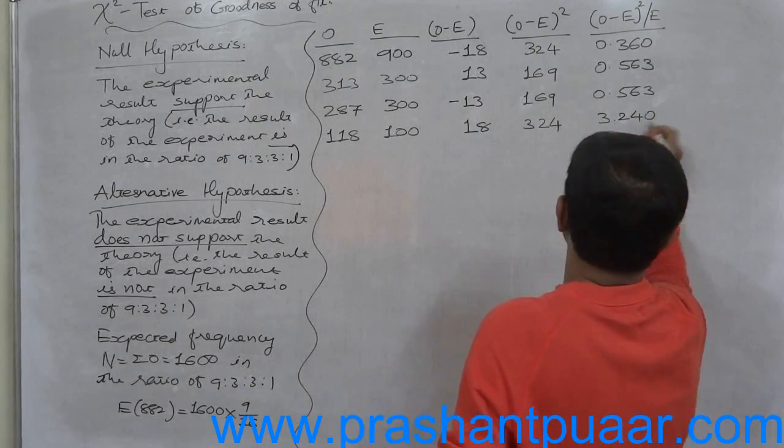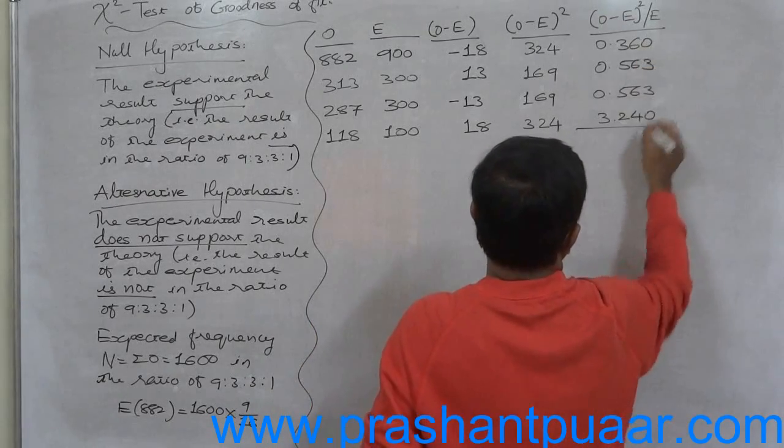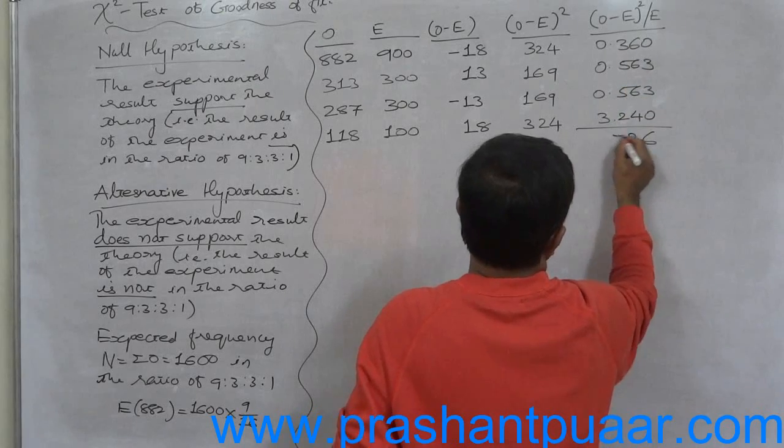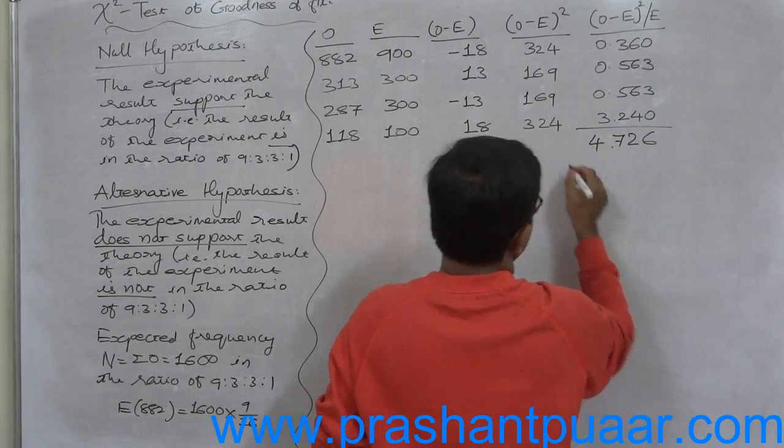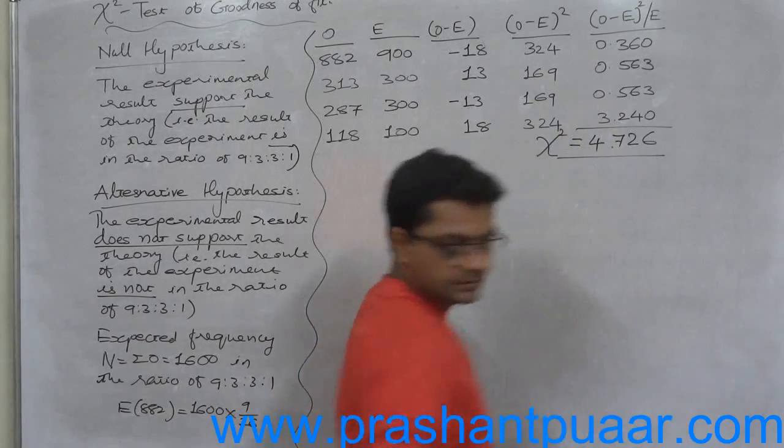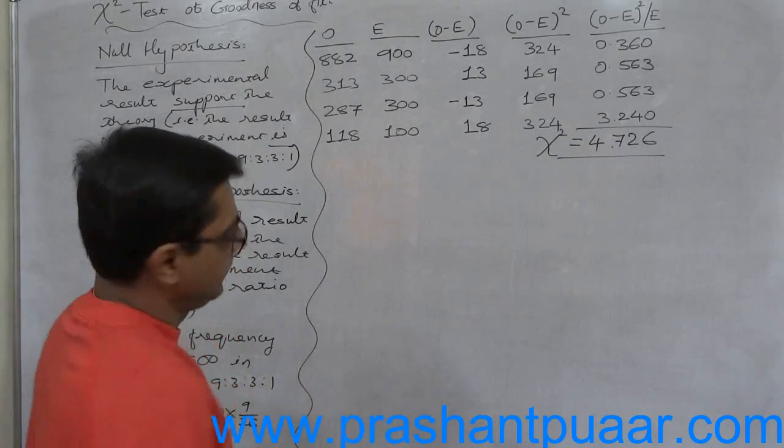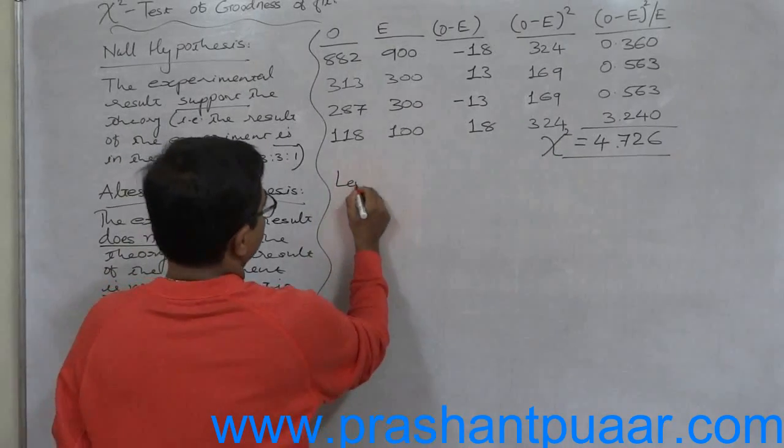The total is 4.762. That is our chi-square: 4.762. Now level of significance.